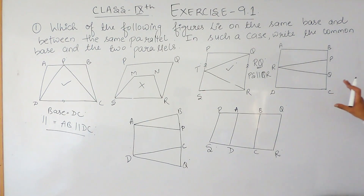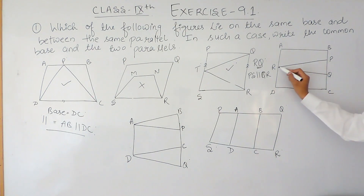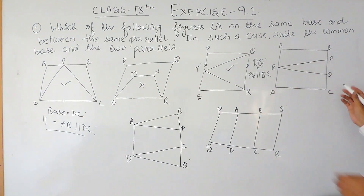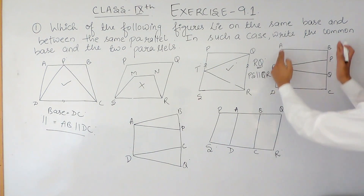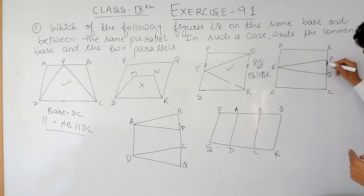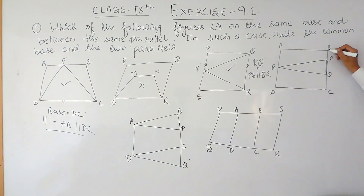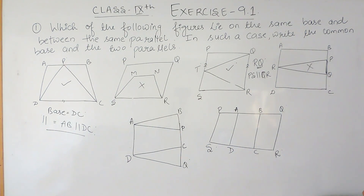If you look at this figure, again there are two figures. One is parallelogram ABCD and the second is triangle RPQ. Obviously they lie between the same parallels, but they do not share a common base. The base for the triangle is PQ but the base for the quadrilateral is BC. So this is incorrect — they do not share the same base.